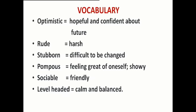Now let us come to the vocabulary section. Before the exercises, here are meanings of certain words. Optimistic means hopeful and confident about the future. Rude means harsh. Stubborn means difficult to be changed, having a fixed mind — they do not want to change themselves and have no flexibility. Pompous means feeling great about oneself, boasting. Sociable means friendly, mingling with everybody. Level-headed means calm and balanced — accepting things with an equanimity of mind.